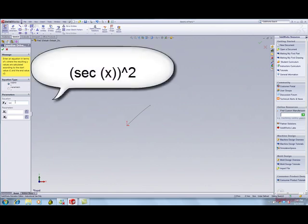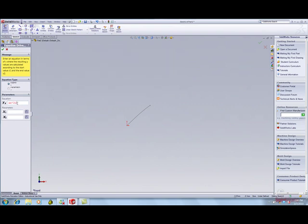For the top curve, enter secant x quantity squared. If you try to enter in secant squared x, SOLIDWORKS will display the function in red. This is not the correct format. For the lower limit, x equals 0. For the upper limit, x equals pi divided by 4. Click OK.